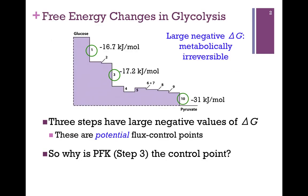Recall that we have 10 steps in glycolysis, as illustrated here, with different energy changes associated with each step, and there are three possible flux control points — that is, steps in the pathway that result in large favorable changes in the delta G.